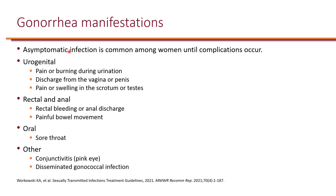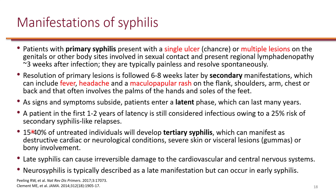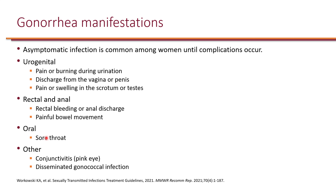For gonorrhea, asymptomatic infection is common among women until complications occur, while men are more likely to be symptomatic. The same routes apply: urogenital and rectal/anal symptoms are similar to chlamydia. One key difference is that with the oral route of transmission, chlamydia is less likely to cause sore throat, whereas gonorrhea is more likely to cause pharyngitis. Conjunctivitis can also occur, and gonorrhea can be severe when it progresses to disseminated gonococcal infection.